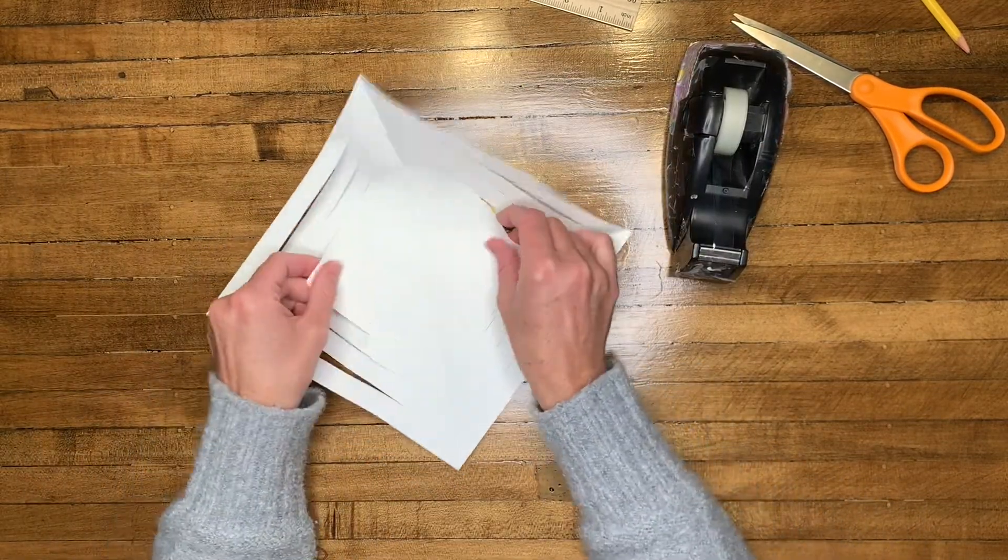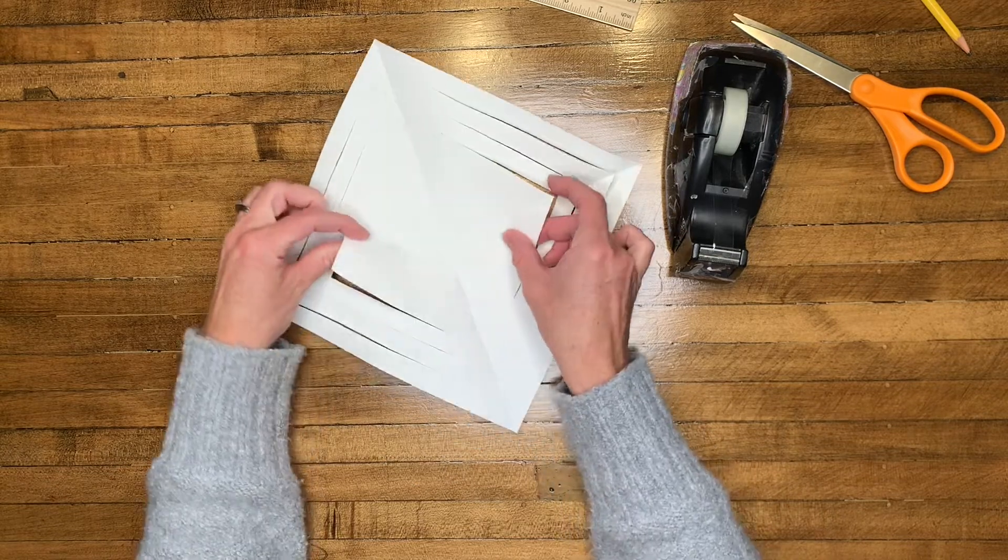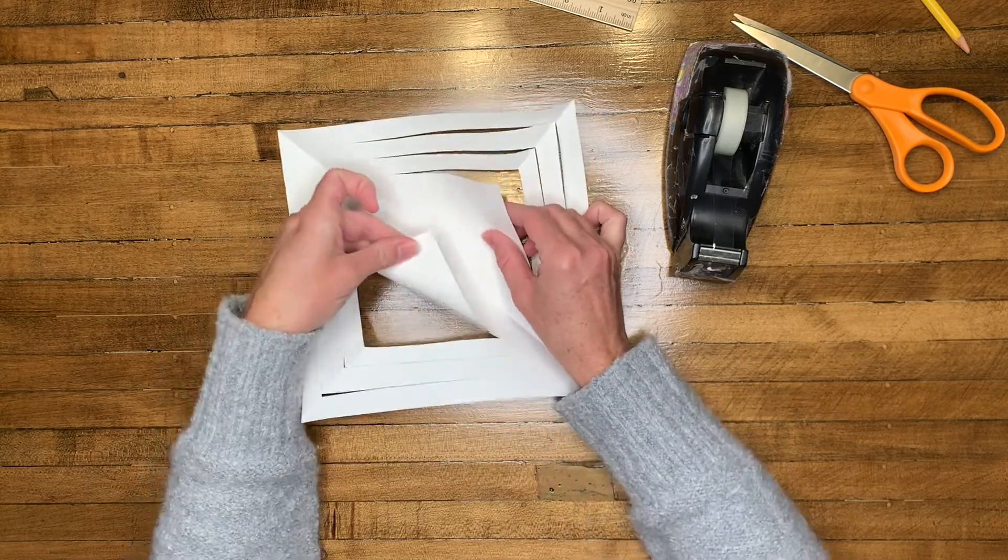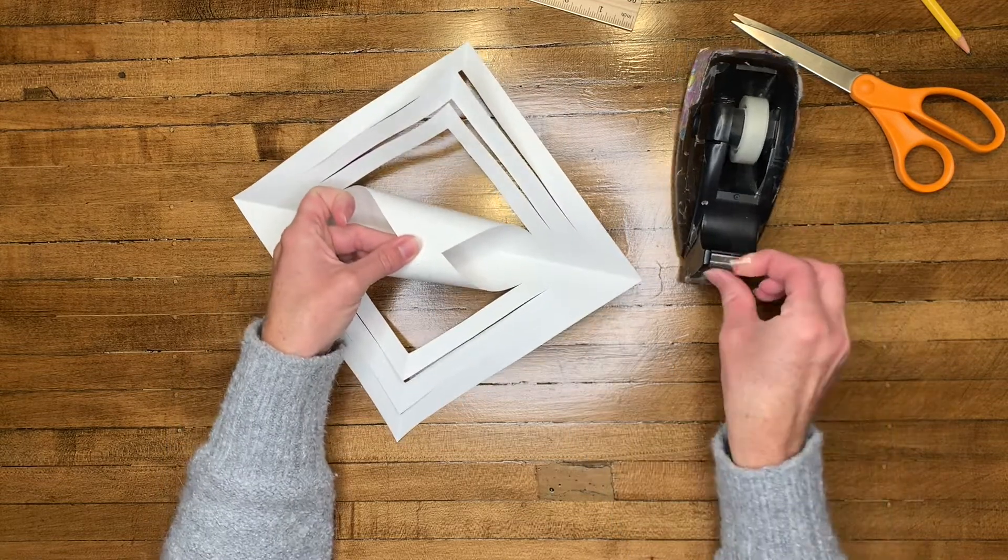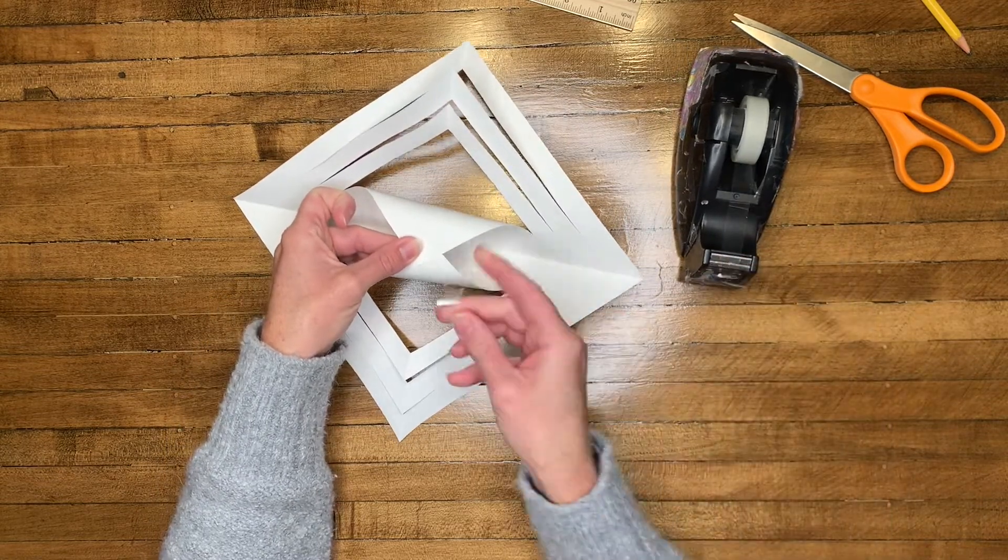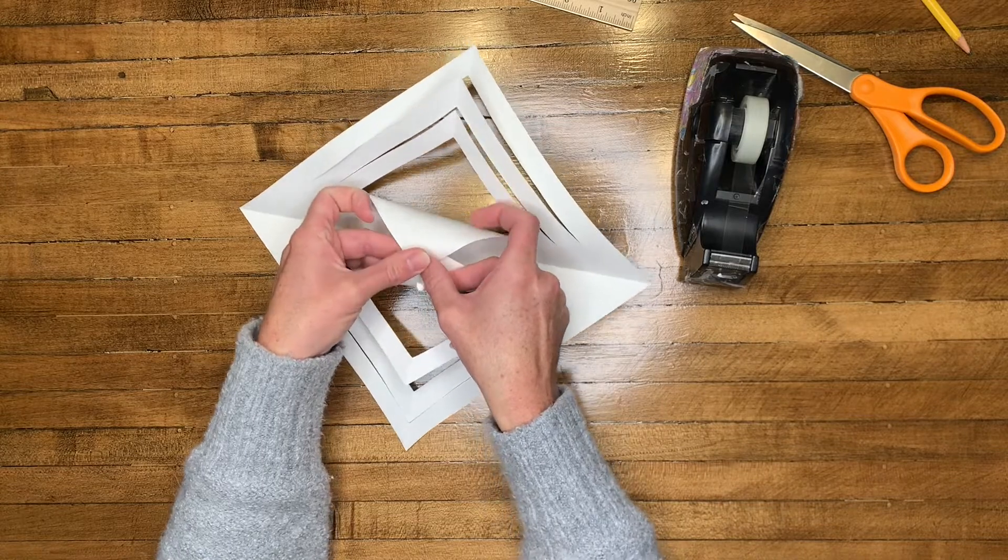So you want to take the two points from your middle section and you want to take those points and overlap them. You want to make sure that they're not touching, but that they're overlapping and connect those with a small piece of tape.